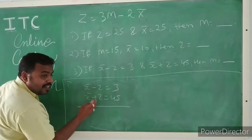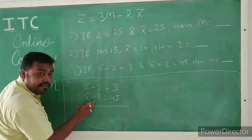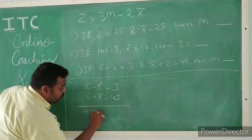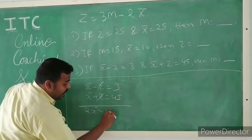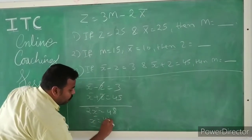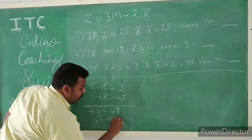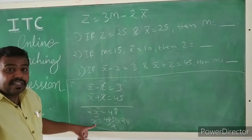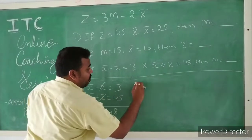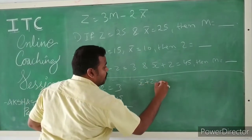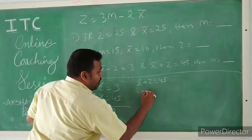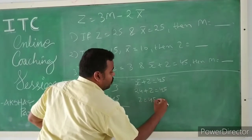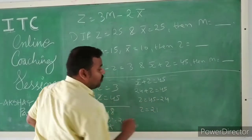Both terms have the same coefficient. Adding the two equations: (x̄ − Z) + (x̄ + Z) = 3 + 45, so 2x̄ = 48, giving x̄ = 24. Substituting x̄ = 24 into x̄ + Z = 45: 24 + Z = 45, so Z = 21.